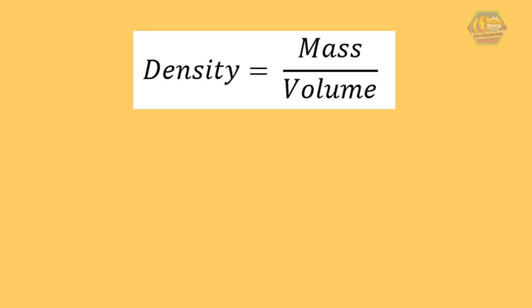Density is denoted as small letter d. Mass is small letter m and volume is small letter v. So the formula of density is equal to mass divided by volume. There are also books that use rho as the symbol for density.